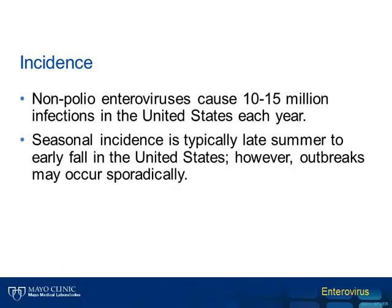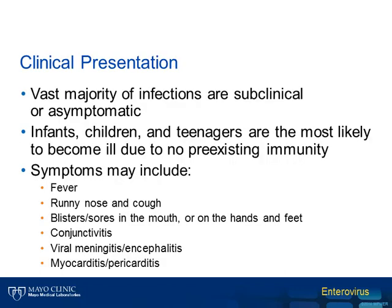There is a seasonal incidence associated with these viruses, which is typically late summer to early fall in the United States. However, outbreaks of enterovirus may occur sporadically throughout the year. The vast majority of infections with enterovirus are subclinical or asymptomatic. Among those that are exposed, infants, young children, and teenagers are the most likely to become ill due to little or no pre-existing immunity to these viruses.